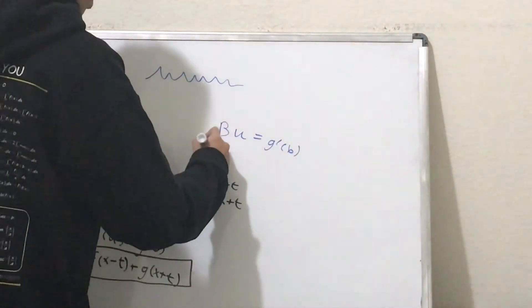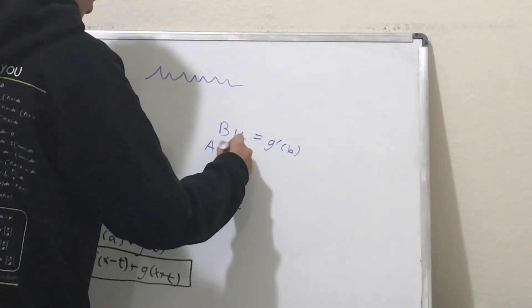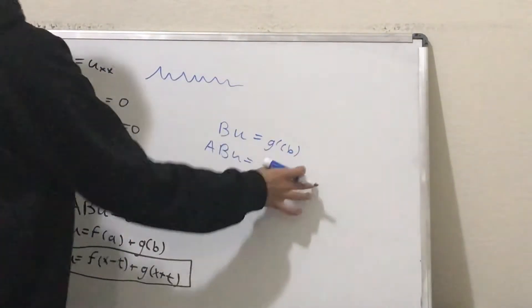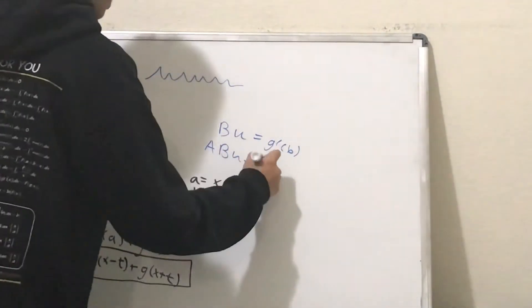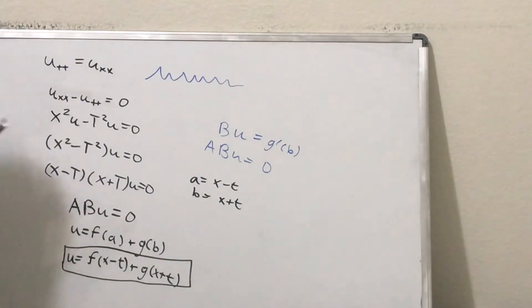Okay. And then if you take ∂a∂b u, well, this is just a constant with respect to a. So, it's going to be 0. And yes, it does work out nicely.